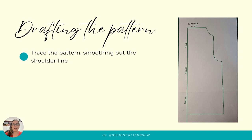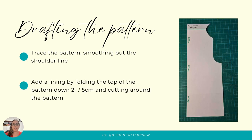This does not have a lining yet. What we're going to do is add a lining by folding the top of the pattern down two inches or five centimeters. This could be done in a straight line or in a curve. Here I've done it in a straight line, and we're going to cut out the pattern. Our lining will be cut out mirroring the pattern. This is our basic cowl.